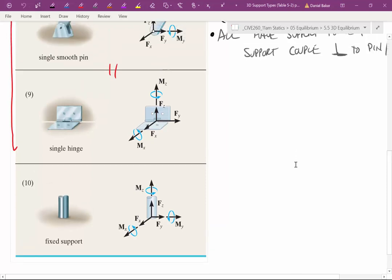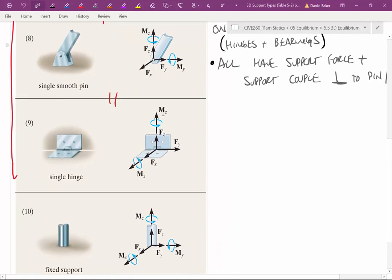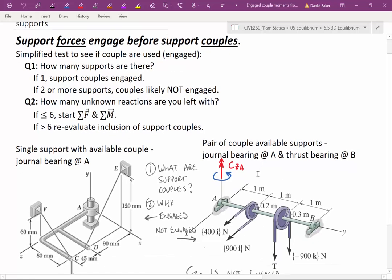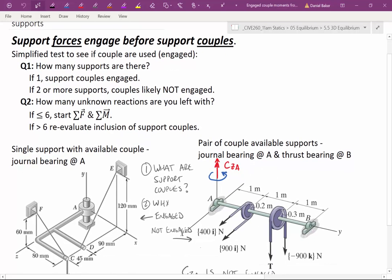Another nuance is that these resistant couples, these M's as labeled in this diagram, are always available but sometimes they're not engaged. They're typically not engaged if we have more than one support. Support forces are engaged before support couples. If we have only one support, like this journal bearing at A, that would likely engage those couples. Whereas over here on this other diagram, we have two different supports, one a journal bearing, one a thrust bearing. Therefore, these couples that are perpendicular here to Y, so in the X and the Z, will not engage because the support forces in the opposing bearing will engage first.